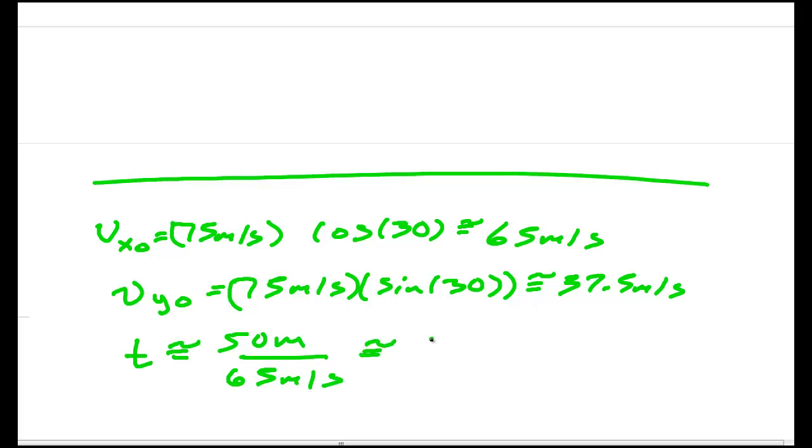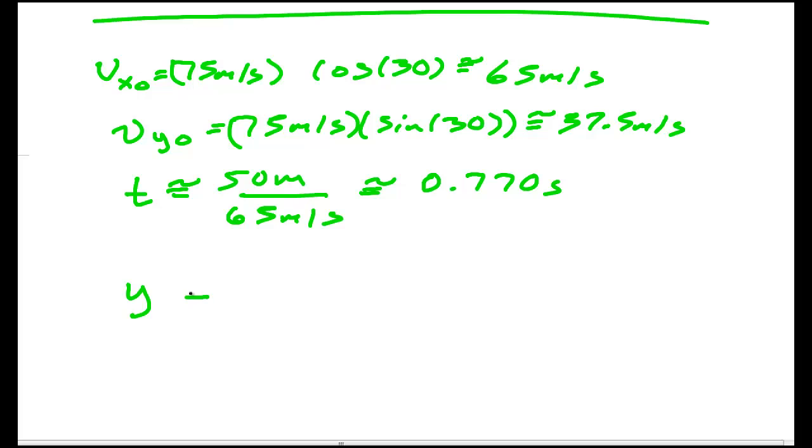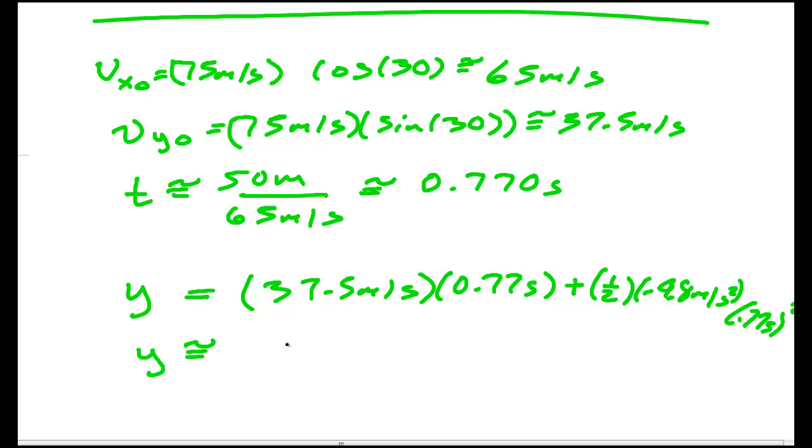And had we done that, we'd have found 0.770 seconds. And then we could have found the y by doing 37.5 meters per second times 0.77 seconds plus one half minus 9.8 meters per second squared times 0.77 seconds squared. And had you done all of that, you would have got the same answer.